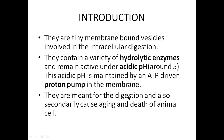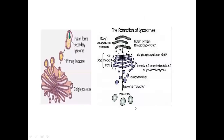The main function of lysosomes is intracellular digestion, and secondarily they cause aging and death of animal cells. The lysosomes originate from the endoplasmic reticulum, then move to the Golgi apparatus. From the trans-Golgi, vesicles are formed, coated with mannose-6-phosphate receptors, resulting in the formation of lysosomal vesicles. These freshly formed vesicles from the trans-Golgi are known as primary lysosomes.